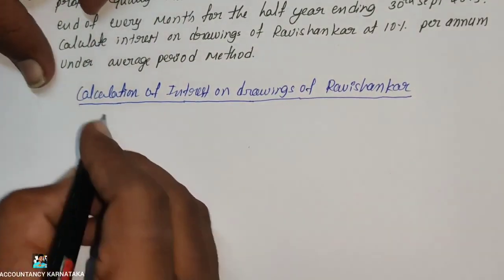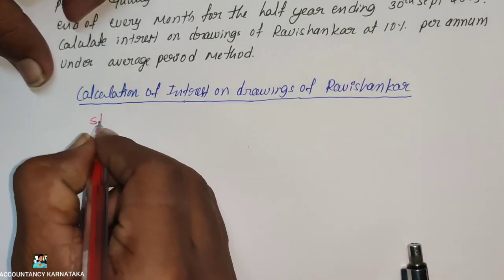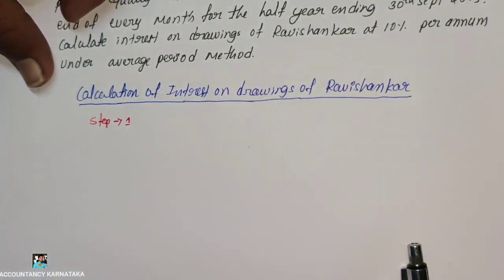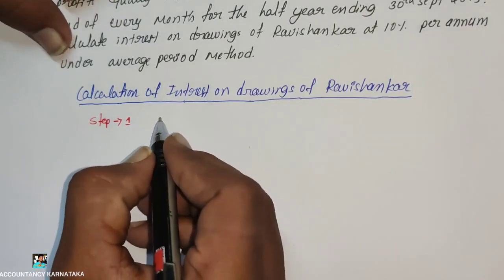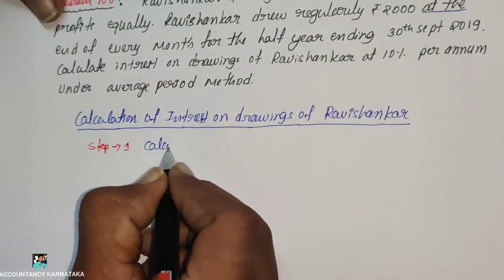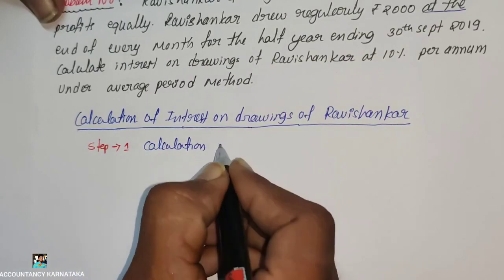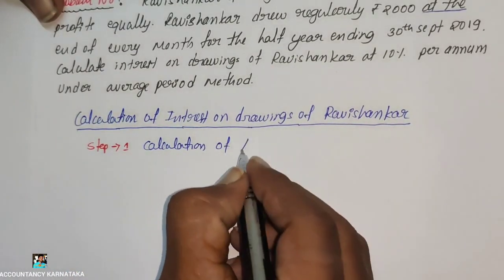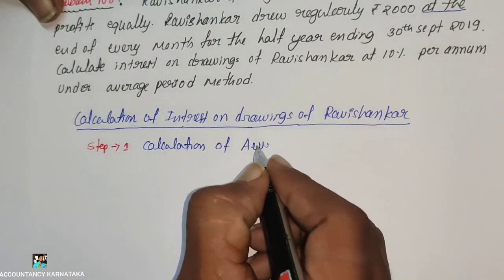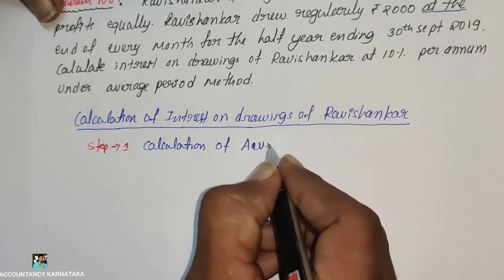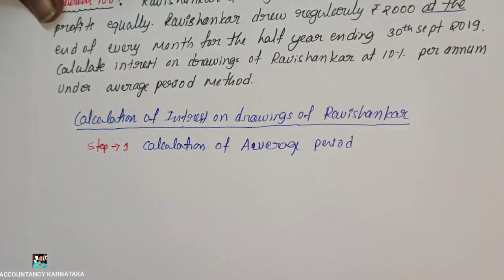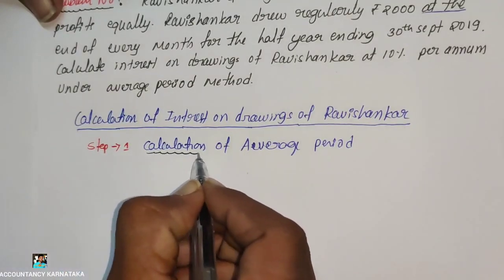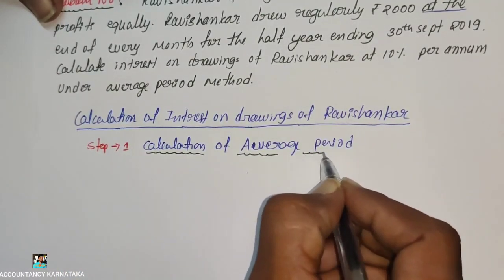Step number one: Calculation of average period. So, calculation of average period — next we go to the formula for average period.